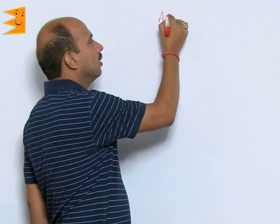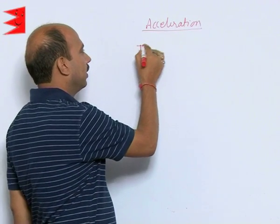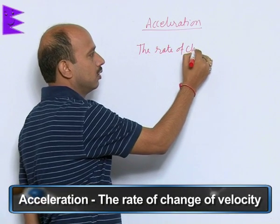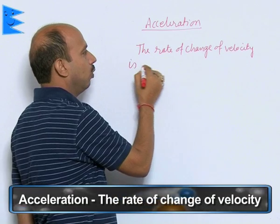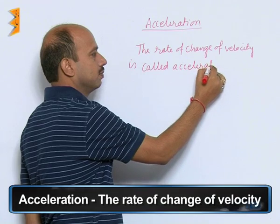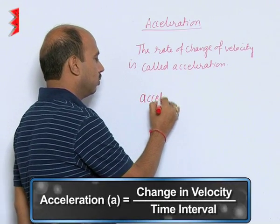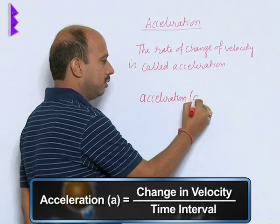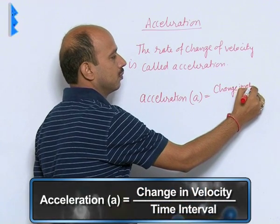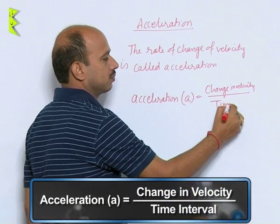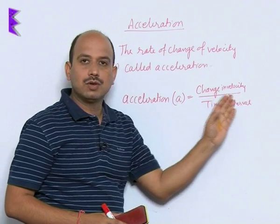Next topic is acceleration. Acceleration is simply the rate of change of velocity. The rate of change of velocity is known as acceleration. Acceleration is represented by small 'a', and is equal to change in velocity upon time interval.